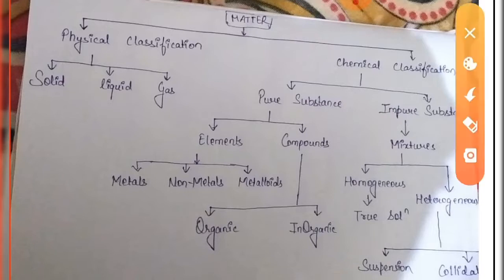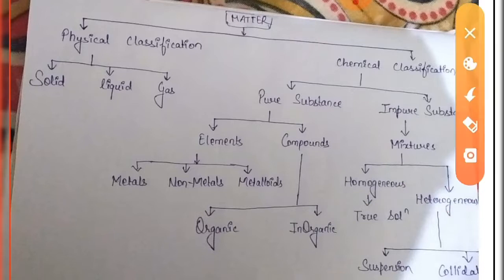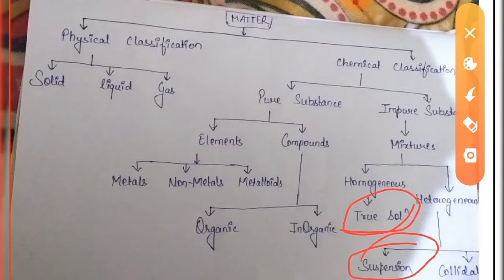When we come to impure substance, impure substance consists of mixtures. Mixtures are known as impure substance — those substances which have more than two constituent particles. Impure substance consists of mixtures, which are basically classified into two parts: the first one is homogeneous mixture and the other one is heterogeneous mixture. Homogeneous mixtures are those types of mixtures where substances are combined in equal proportion, whereas heterogeneous mixtures are those where substances are not combined in equal proportion.